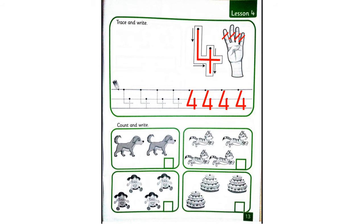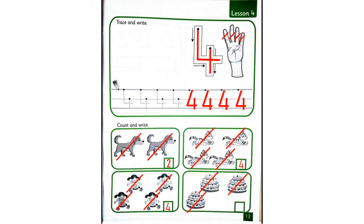Next. Let's count together. How many dogs do we have? One, two. Great. And write number two inside the square. Next. How many cats do we have? One, two, three, four. Wow. Write number four. Next. How many dogs do we have? One, two, three, four. Excellent. Write number four. How many cakes do we have? One, two, three. Write number three. Lovely kids.